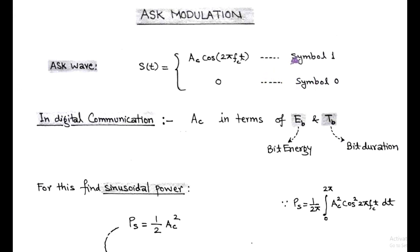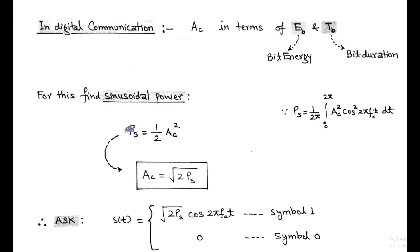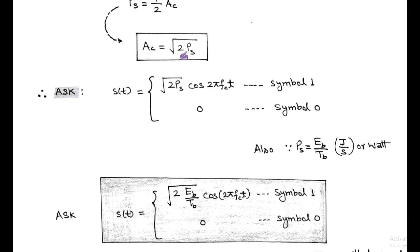This means that for symbol 1 there is a presence of the carrier wave, and for symbol 0 there is an absence of the carrier wave — this is called amplitude shift keying. In digital communication, the carrier amplitude is expressed in terms of bit energy EB and bit duration TB. Using the formula for sinusoidal power PS = (1/2)·AC², we can write carrier amplitude AC = √(2·PS). So the modified ASK wave is: S(t) = √(2·PS)·cos(2πfct) for symbol 1, and 0 for symbol 0.